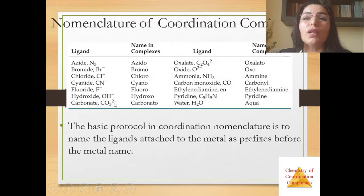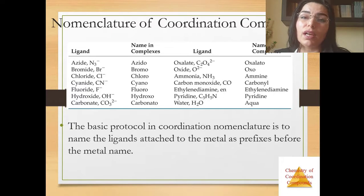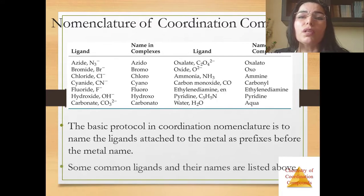Now about nomenclature of coordination compounds. The basic protocol in coordination nomenclature is to name the ligands attached to the metal as prefixes before the metal name. Some common ligands and their names are listed here. For example, for nitrogen azide ligand, named complex azido. Then bromide ligand, named complex bromo. And so on.